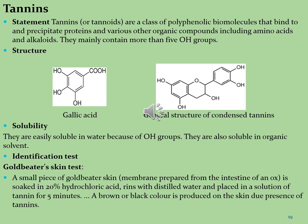Gallic acid is trihydroxybenzoic acid, a type of phenolic acid found in galls, sumac, witch hazel, tea leaves, oak bark and other plants, with chemical formula C6H2(OH)3COOH. It is found both free and as part of hydrolyzable tannins. Gallic acid is used as an antioxidant to protect cells against oxidative damage, shows cytotoxicity against cancer cells without harming healthy cells, is used as a remote astringent in cases of internal hemorrhage, and for treatment of diabetes mellitus.